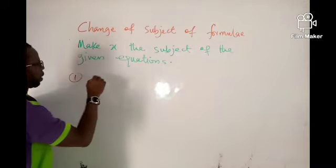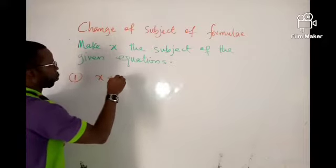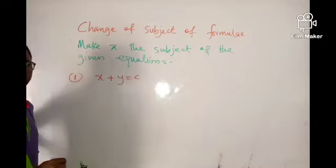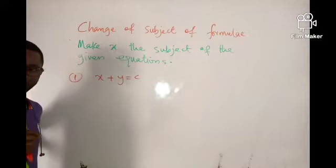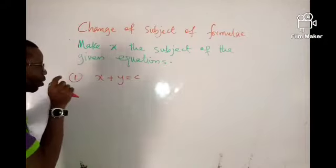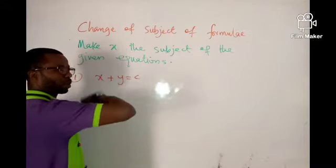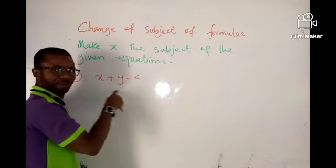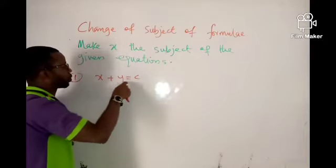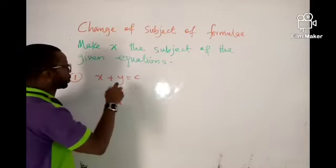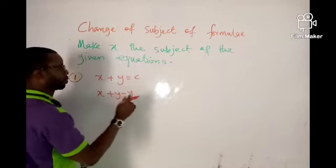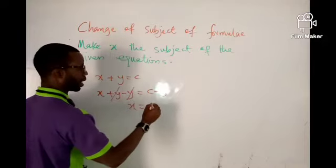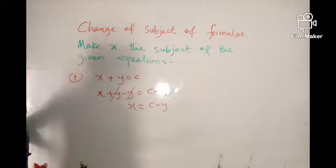Number one: I have x plus y equals c. I want to make x the subject of the formula. When you make something the subject of the formula, that thing must stand alone on one part of the equation while other things move to the other side. Something is attached to x and it's positive, so you use the reverse of positive, which is minus. Subtract y from both sides — this cancels — and we have made x the subject. It's as simple as that.